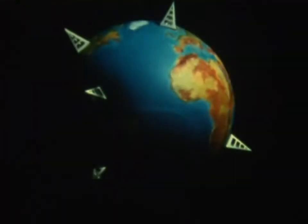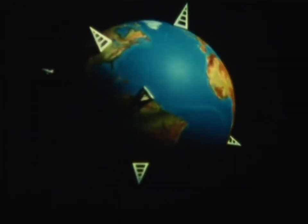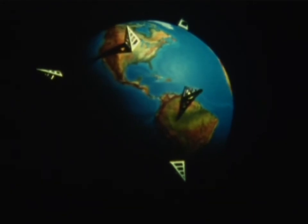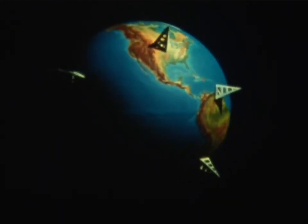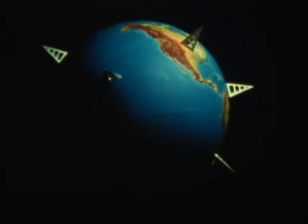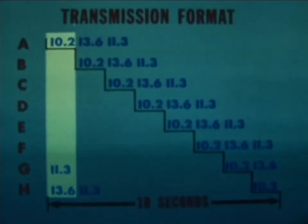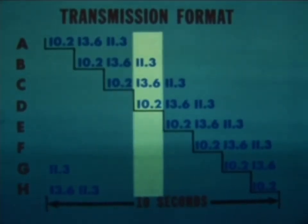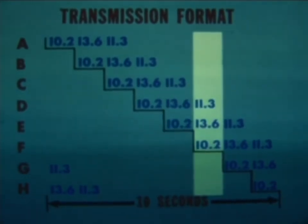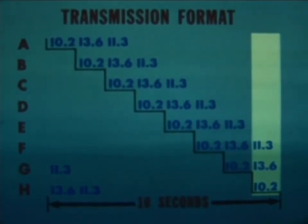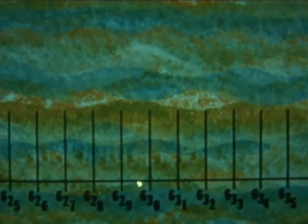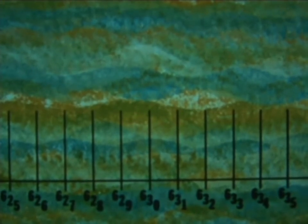Briefly reviewing the basic features of the Omega navigation system, we begin with eight VLF transmitting stations strategically located around the globe. The stations transmit on a time-shared basis with their signals phase-locked to a common standard time.